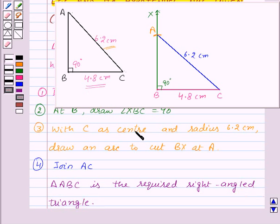So here we have constructed a right-angled triangle ABC when the length of one leg BC and its hypotenuse AC are given. With this we finish this session. Hope you must have enjoyed it. Goodbye, take care, and keep smiling.